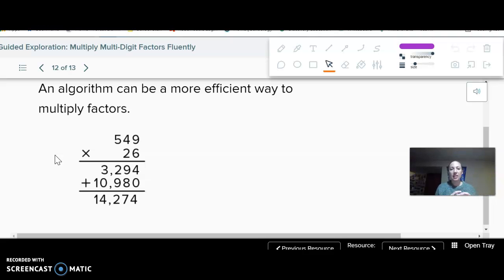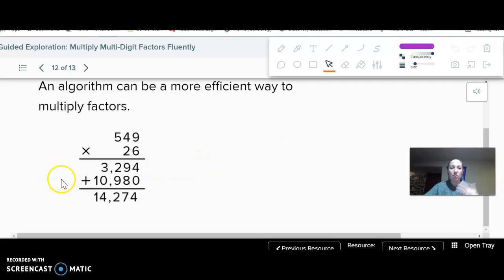The area model isn't this terrible. I'm not going to recommend adding 549, 26 times. That is even less efficient and isn't worth your time. But the area model is not terribly inefficient. It's just maybe a little less efficient. But if that's the way that makes sense to you, use that method. So I think on the notes, option one is to use the algorithm.